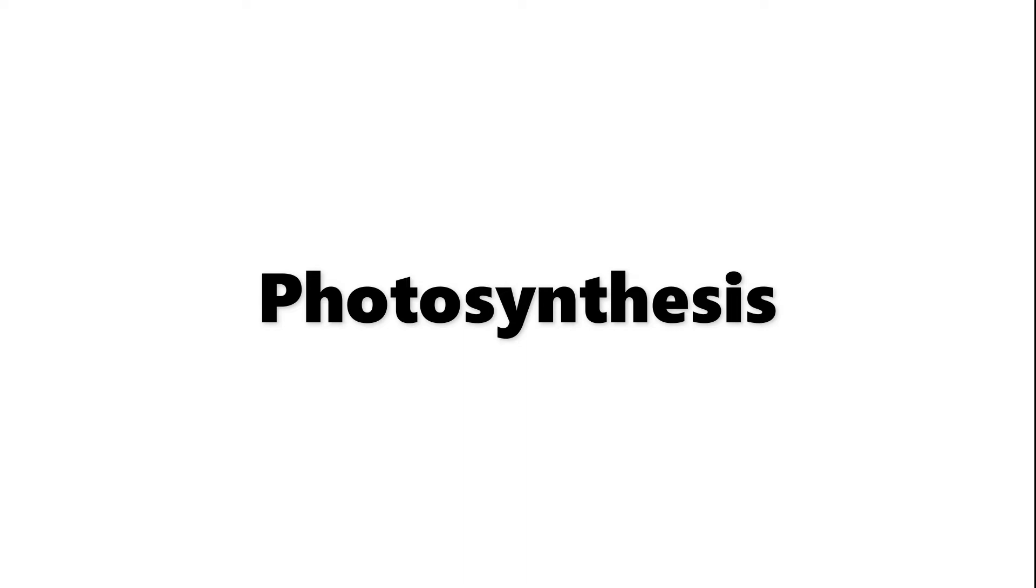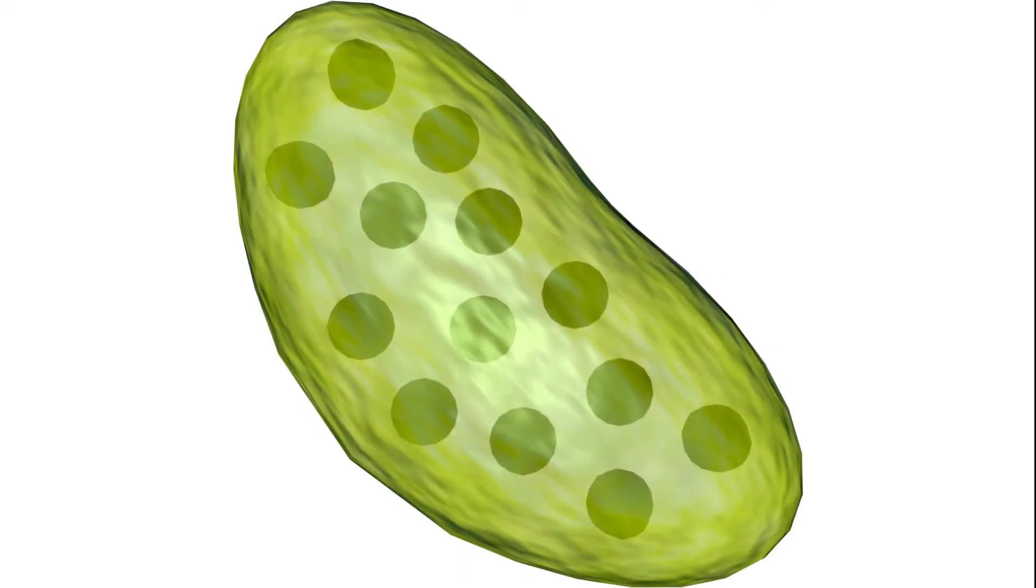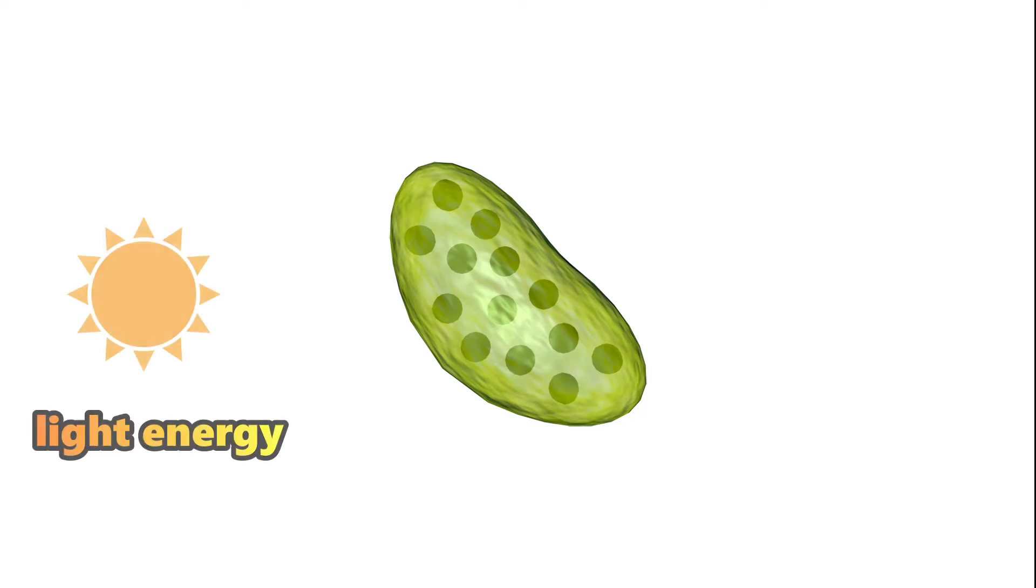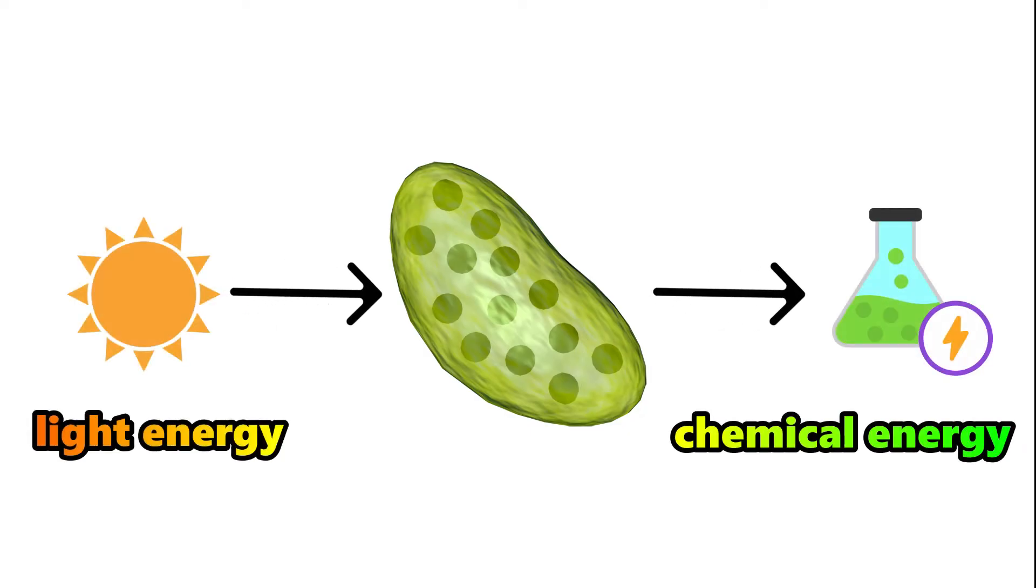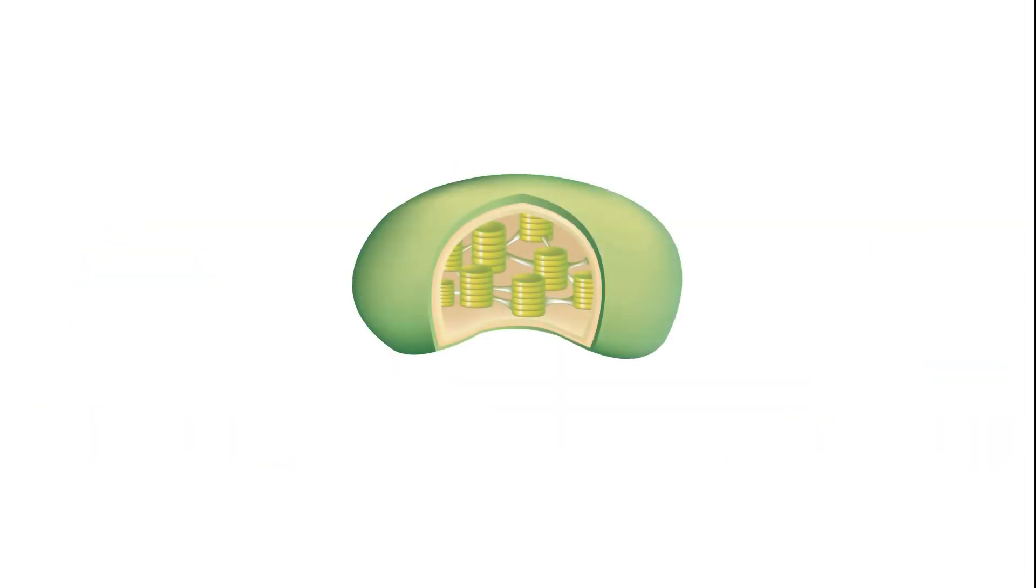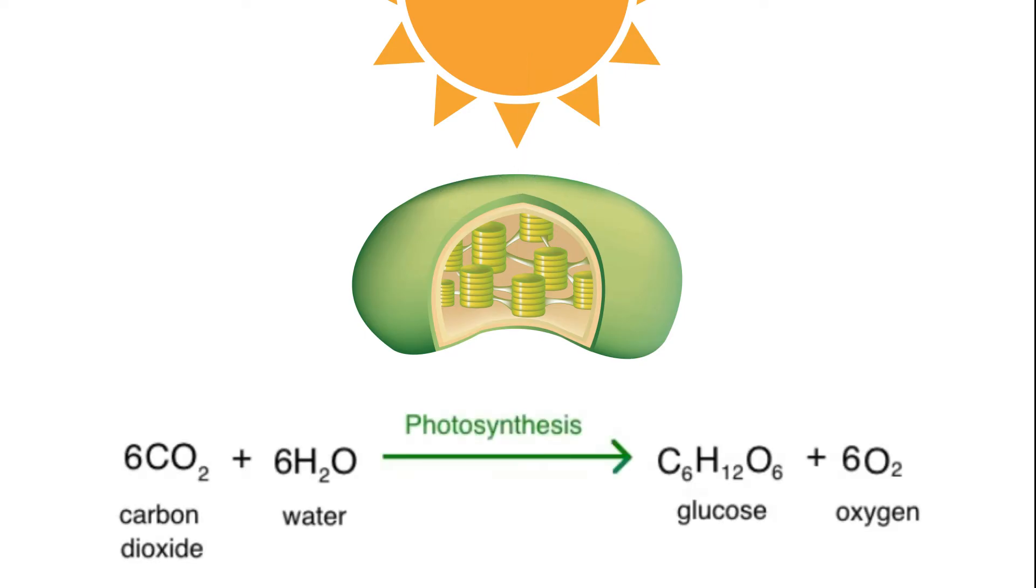Photosynthesis: Chloroplasts are the sites where photosynthesis takes place, a complex process that converts light energy into chemical energy. Chlorophyll in the thylakoid membranes absorbs sunlight and uses it to convert carbon dioxide and water into glucose and oxygen. This process is the foundation of life on Earth, providing both energy and oxygen.